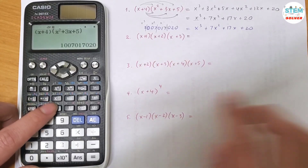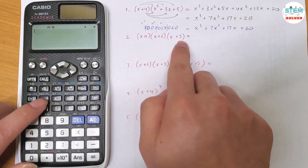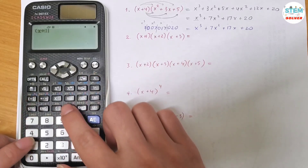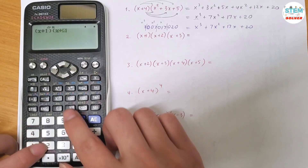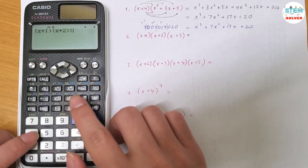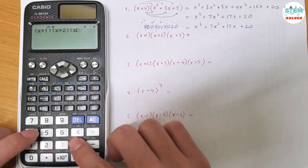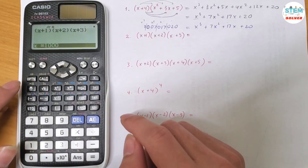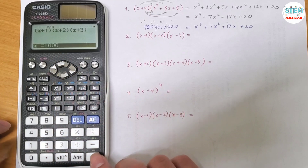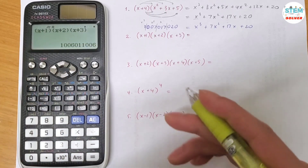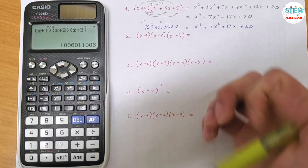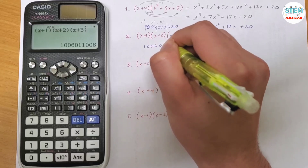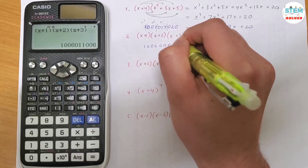Now let's try the next one. Type in exactly how it is written on the paper: x plus 1, times x plus 2, times x plus 3. Hit solve, give it 1,000, hit equals twice.